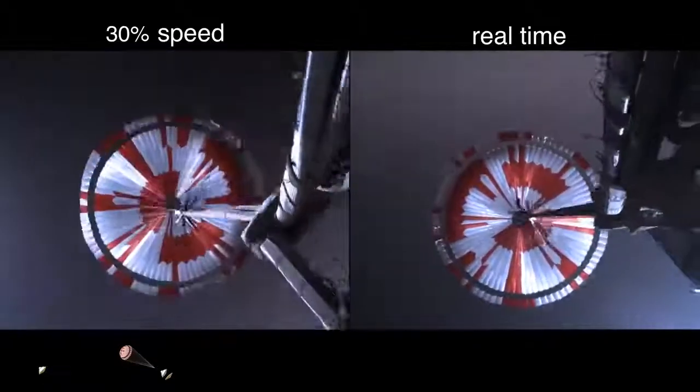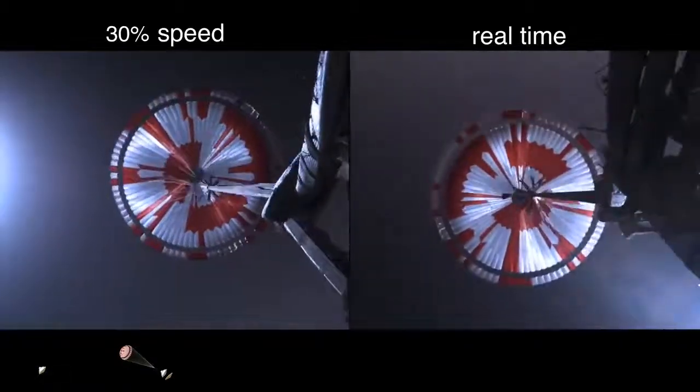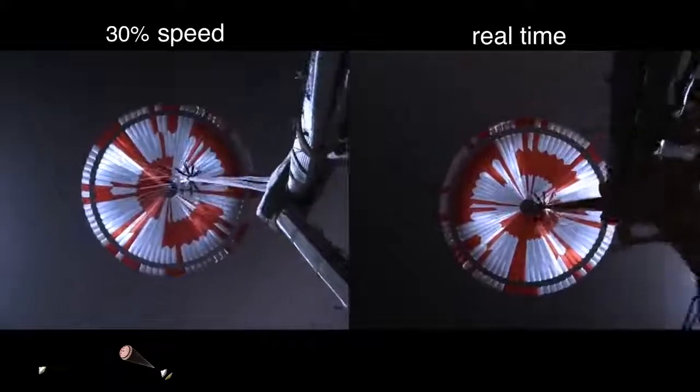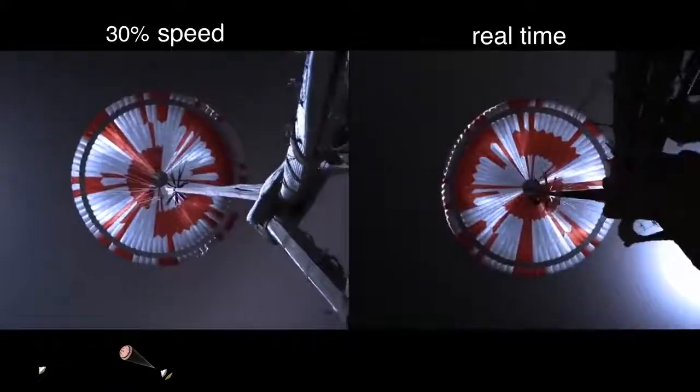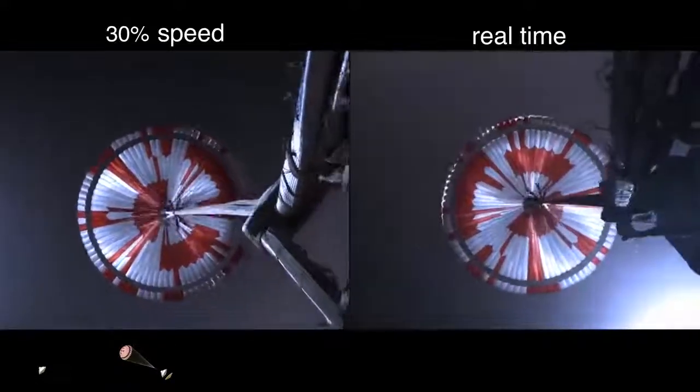The navigator has confirmed that the parachute has deployed, and we are seeing significant deceleration in the velocity. Our current velocity is 440 meters per second at an altitude of about 12 kilometers from the surface of Mars.